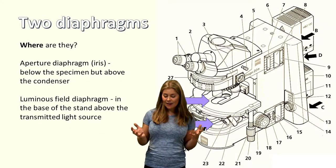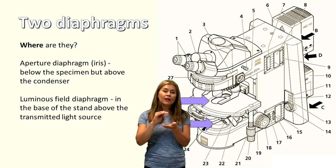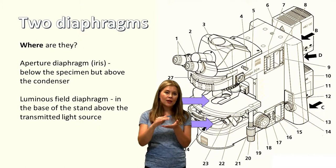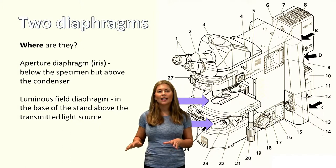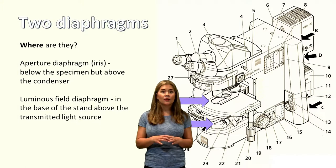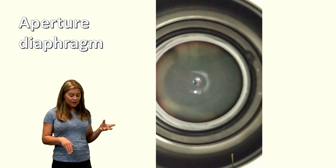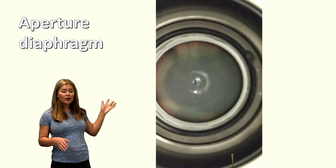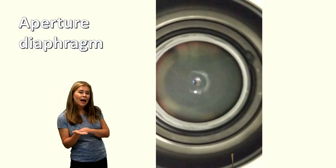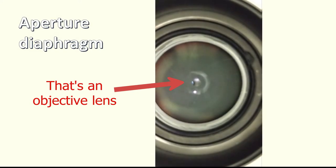So where are these diaphragms? The aperture diaphragm, otherwise known as the iris diaphragm, exists immediately above the condenser lens and so below the stage. Whereas the luminous field diaphragm is located in the base of the microscope, so in the stand, above that transmitted light source. This is quite confusing, especially if you can't see it or you don't completely understand what they do. So the aperture diaphragm, here's an example of a video. And so this is if you just film from underneath the stage.